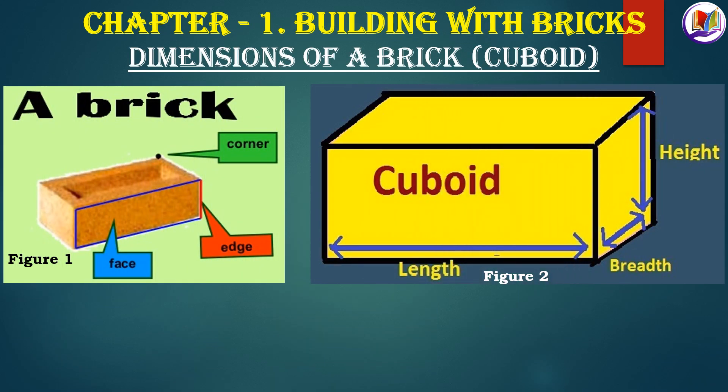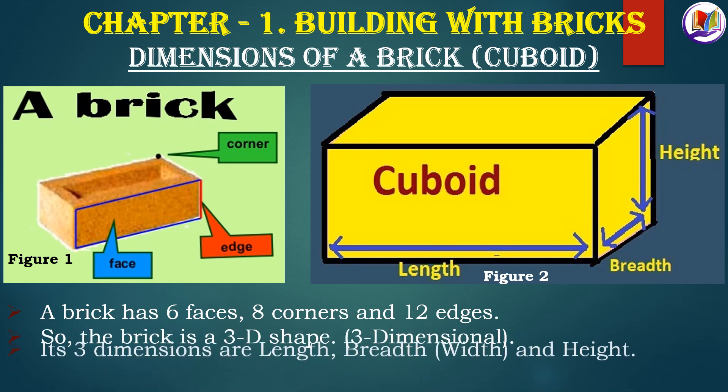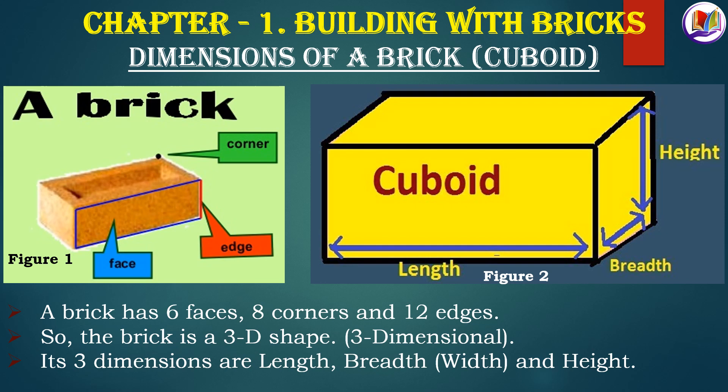Before we move on to the exercises, let's have a look at the dimensions of a brick and recall the properties of cuboid. If you look at figure number 1, it shows the face, edge and corner. A brick has 6 faces, 8 corners and 12 edges. So, the brick is a 3D shape that is 3 dimensional. Its 3 dimensions are length, breadth and height. You can have a look at it in figure number 2.